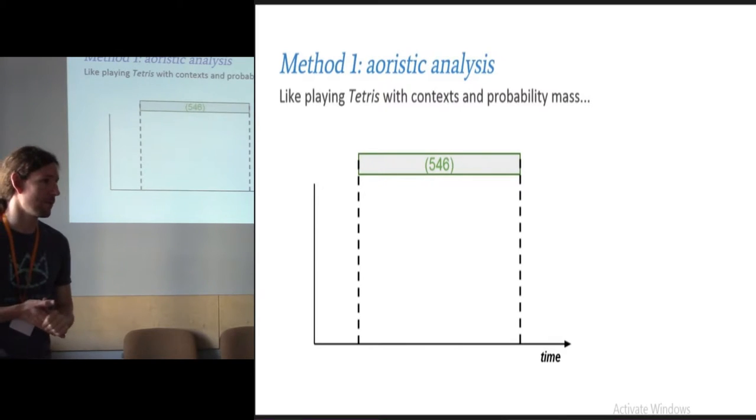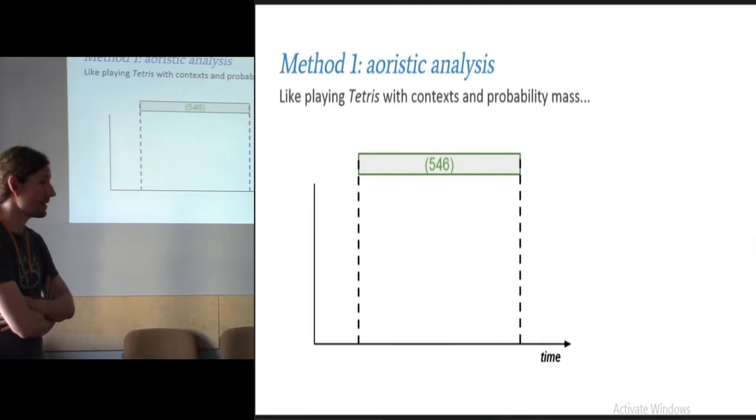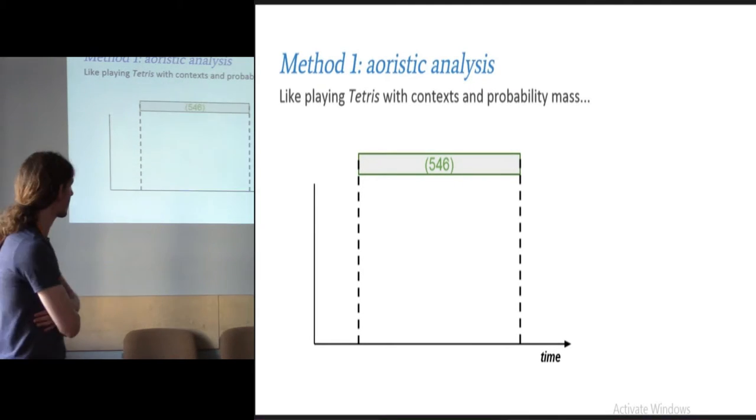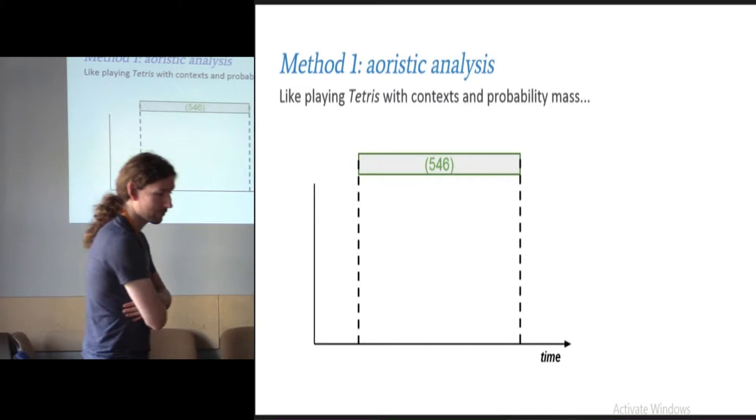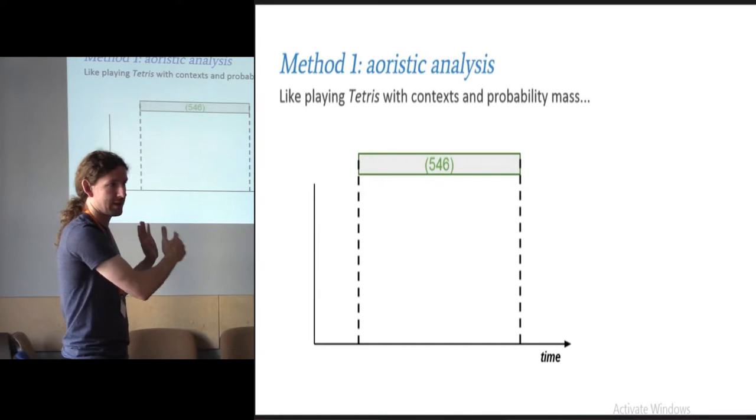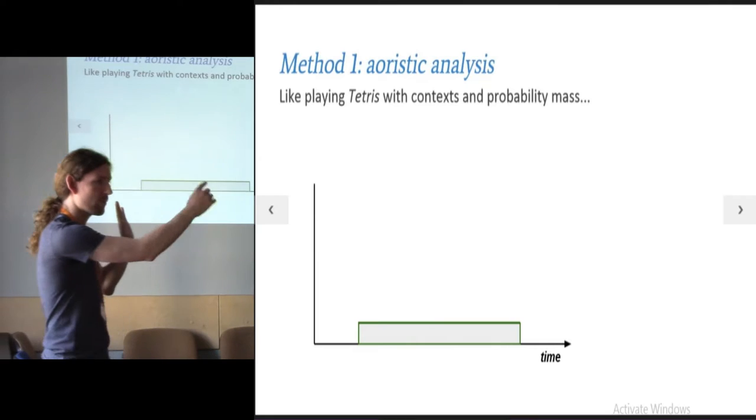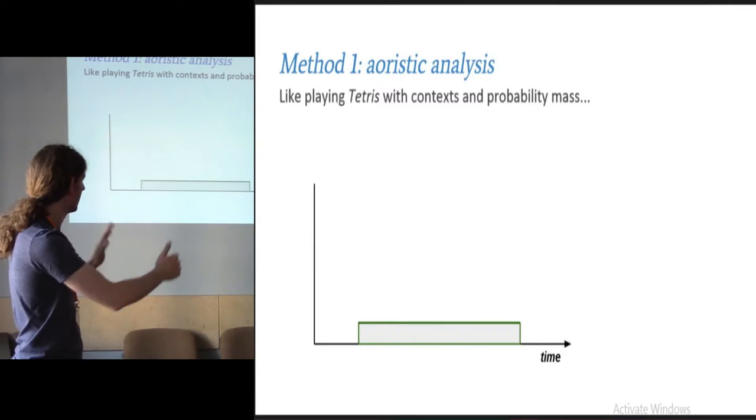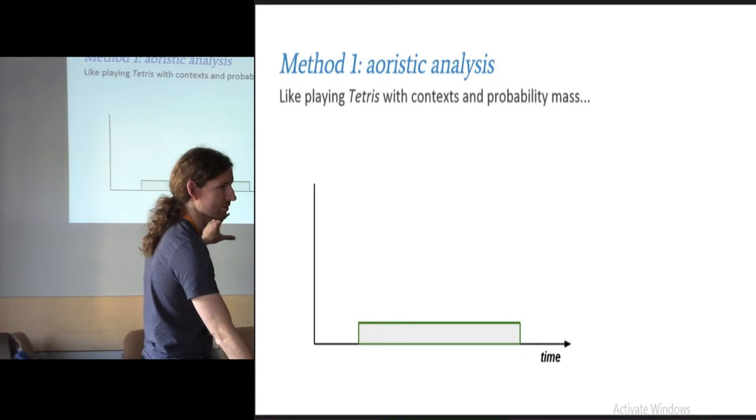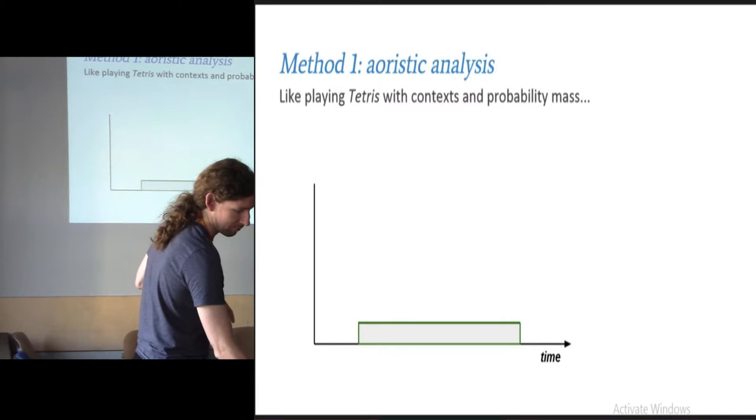The first method that Enrico Crema has done something, and that I've tried to apply here for dealing with this, is something called aoristic analysis, which is basically why I describe it as playing Tetris. Let's say you have a context with a start date and an end date as supplied by the excavators. That context has a probability mass of one. It must have happened at some point in that duration. So you can start to build up some probability distribution, using a uniform distribution instead of a radiocarbon derivative one.